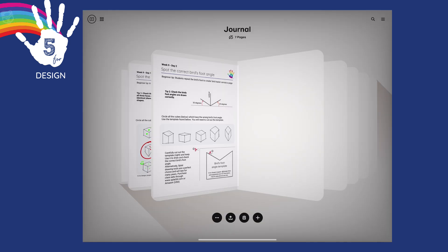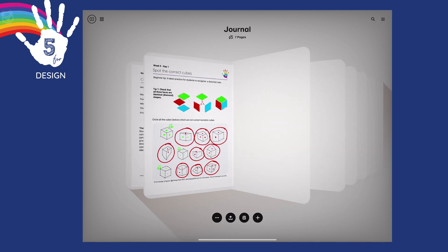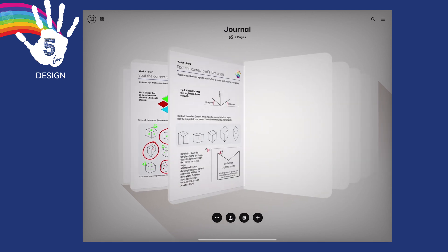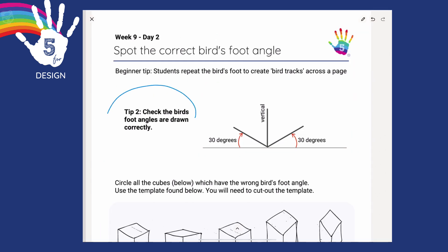Hi, nice to see you again. Today, we're giving you another tip on how to improve your cubes. Looking back, last lesson, tip number one was to look for even diamond shapes in all of the faces. Today is tip number two. Tip two, check the bird's foot angles are drawn correctly. Very good advice.